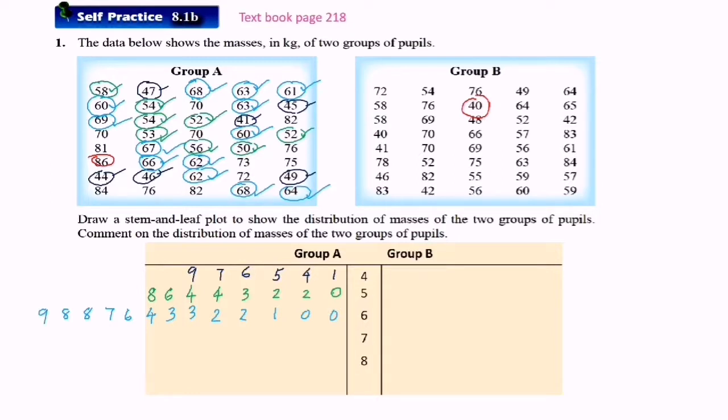Now we find the number from 70 to 79. One 70, so we put three 0s here. One 72. Two 75, and two 76.